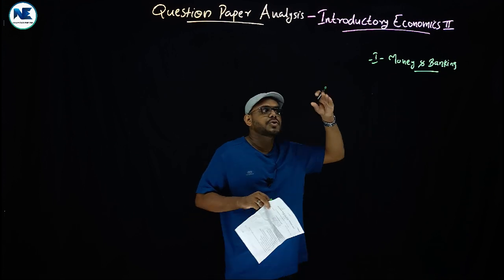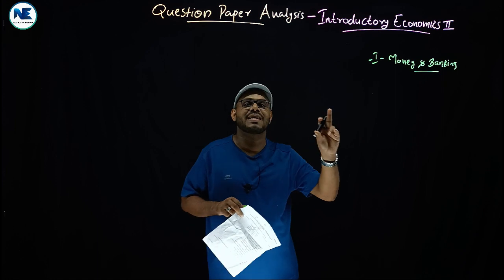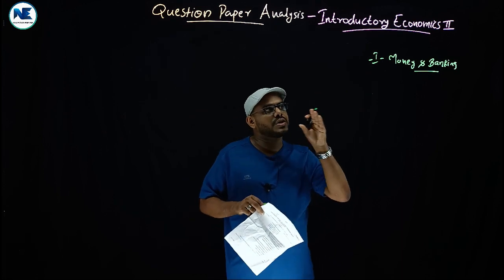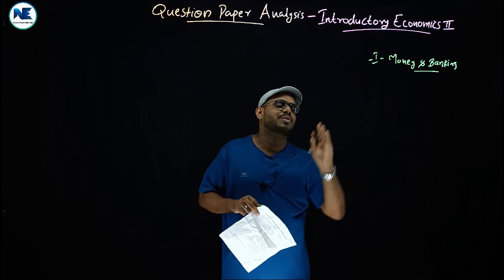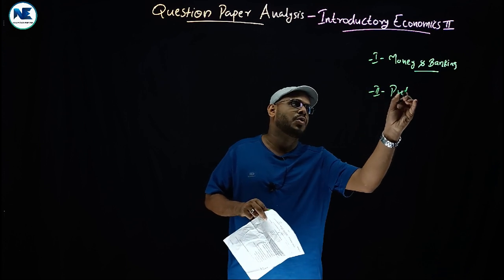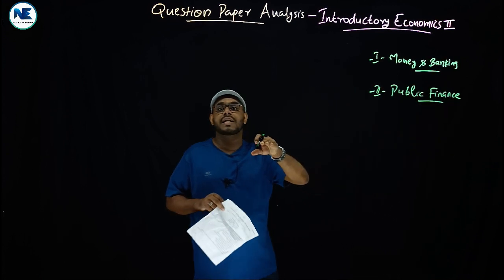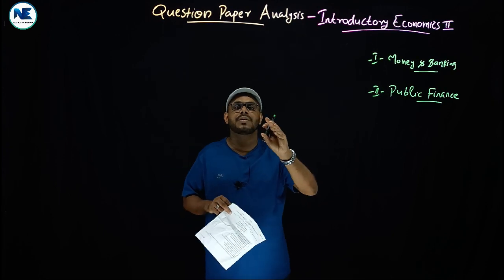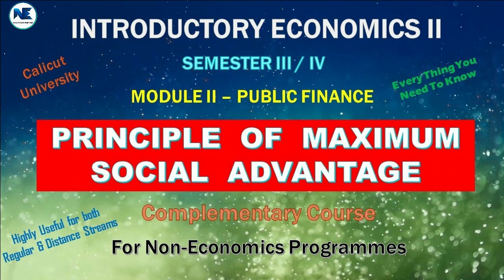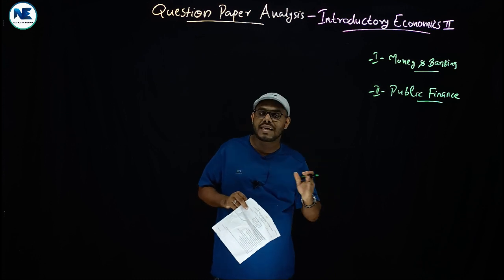Module 1 can be classified into two areas: money and banking, where you can see commercial banks as well as the central bank, which is RBI, Reserve Bank of India. This is related to macroeconomics. The second module is related to public finance, covering the principle of maximum social advantage, public revenue, sources of public revenue, budget, fiscal policy, and the finance commission.